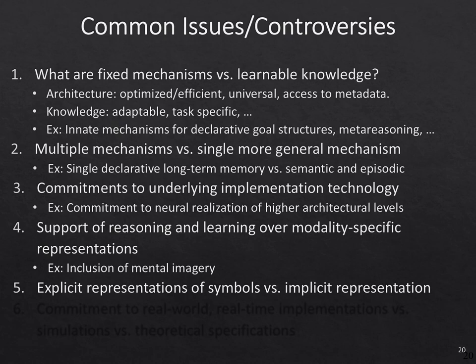Another representation question across cognitive architectures is whether symbols are represented explicitly or implicitly. Many cognitive architectures — all symbolic ones and many AI ones — have explicit representations of symbols. However, neural representations achieve the functionality of symbol systems through implicit representations — large vectors of numbers that are able to achieve many of the processes we associate with symbol manipulation. So that's definitely a controversy we see in cognitive architectures.